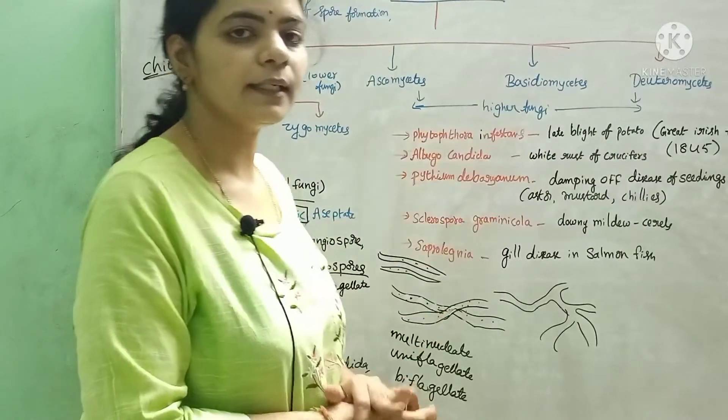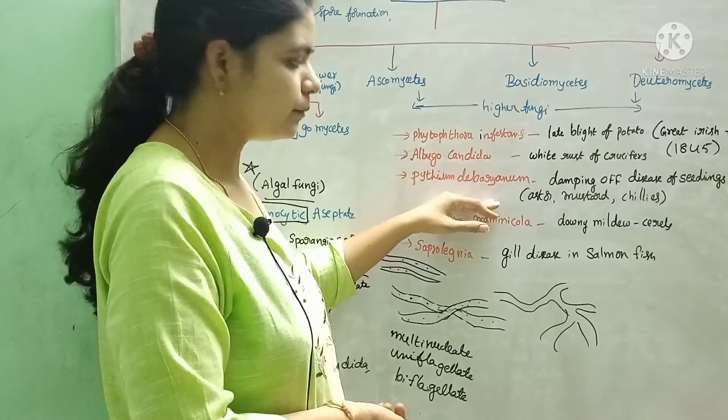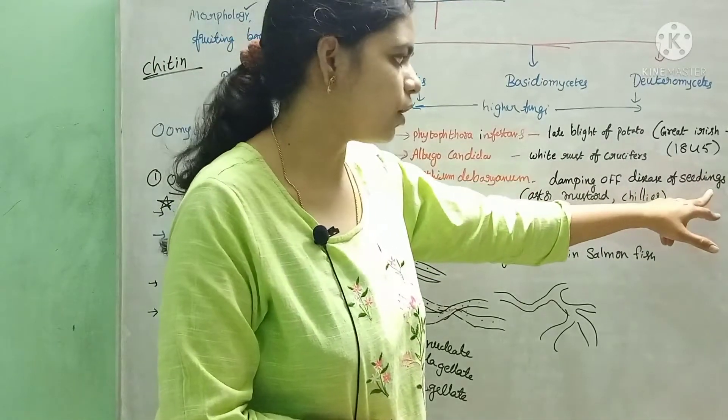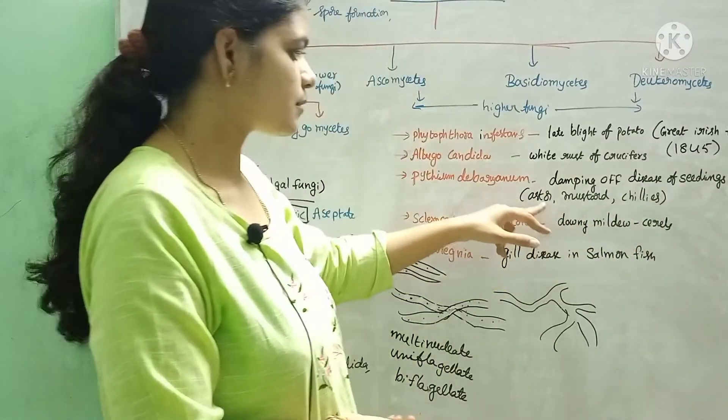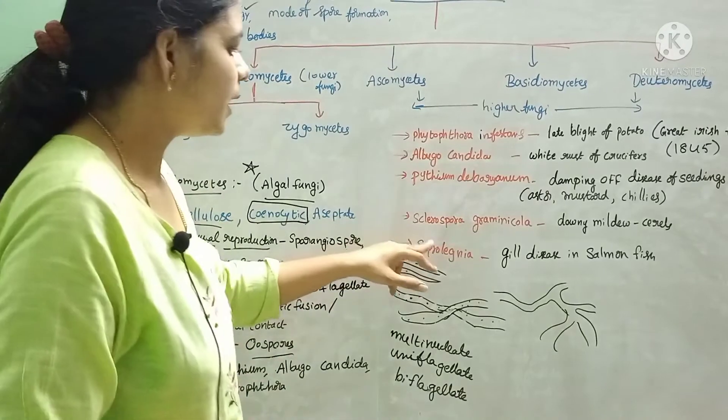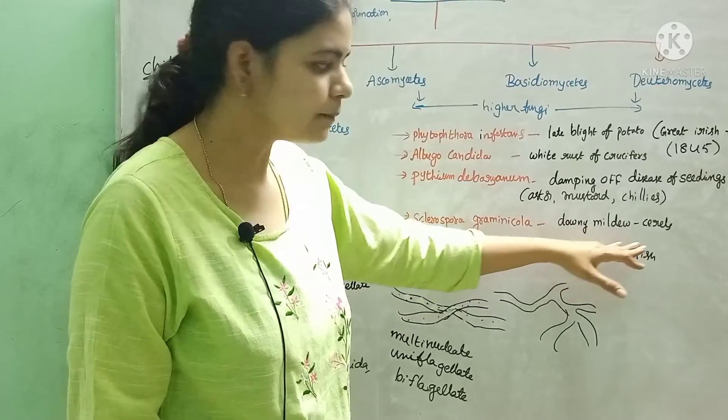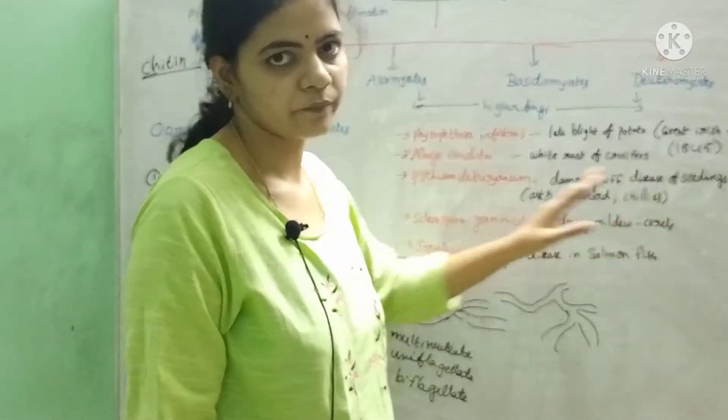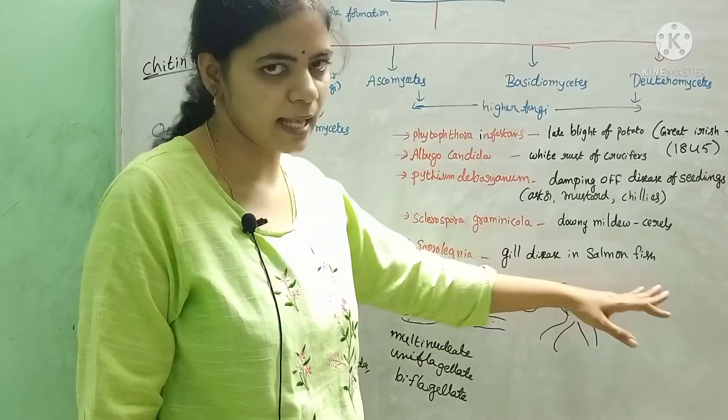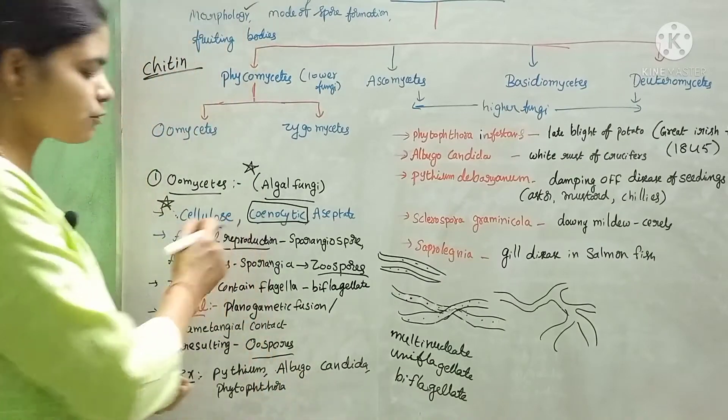Albugo candida causes white rust disease in crucifers. Pythium debaryanum causes damping off disease of seedlings in tomato, chilies, castor, and mustard. Sclerospora graminicola causes downy mildew in cereals. Saprolegnia causes gill disease in salmon fishes. These are some of the diseases of oomycetes.